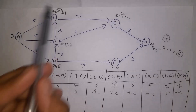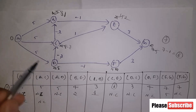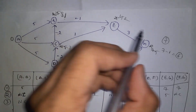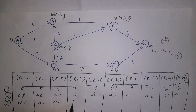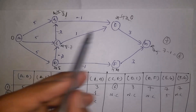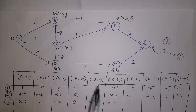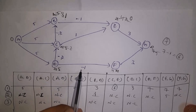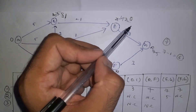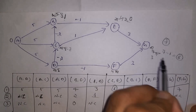Third iteration: A to B is 5, already 1 — no change. A to C is 5, already 3 — no change. A to D is 5 — no change. B to E: 1 minus 1 equals 0, smaller than 2 — replace 2 with 0. C to B: 3 minus 2 equals 1, already 1 — no change. C to E: 3 plus 1 equals 4, already 0 — no change. D to C: 5 minus 2 equals 3, already 3 — no change. D to F: 5 minus 1 equals 4, already 4 — no change. E to G: 0 plus 3 equals 3, smaller than 5 — replace 5 with 3. F to G: 4 plus 3 equals 7, but 3 is smaller — no change.